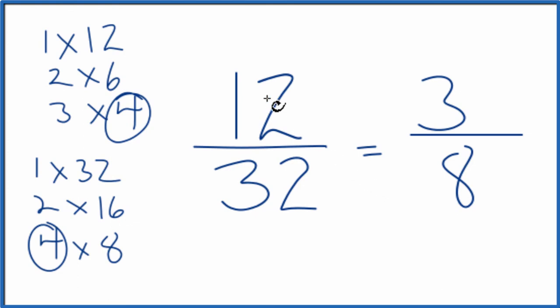These are equivalent fractions. 12 divided by 32, or if you divide 3 by 8, you're going to get the same answer. It's just that we've simplified 12 32nds down to 3 8ths.